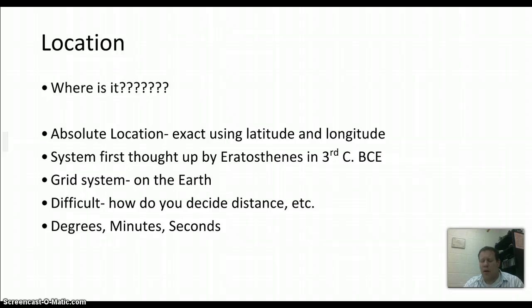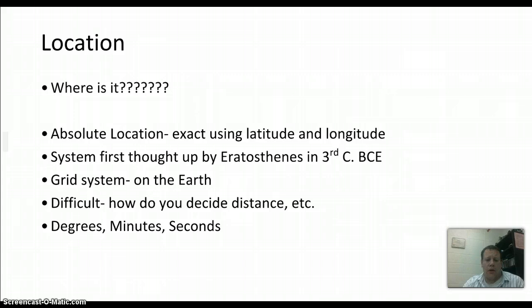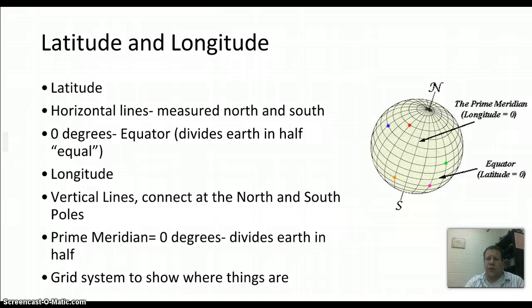Location is simply where stuff is. There are two types: absolute location, which uses latitude and longitude, and relative location. The latitude and longitude grid system was actually figured out by a Greek named Eratosthenes in the 3rd century BC — we'll talk about him later. It's a grid system around the Earth, and we measure distance in degrees, minutes, and seconds.